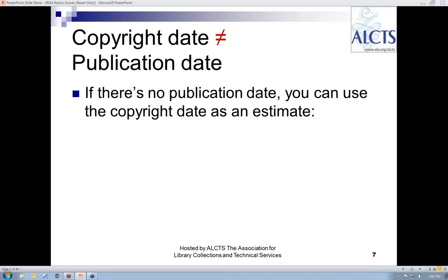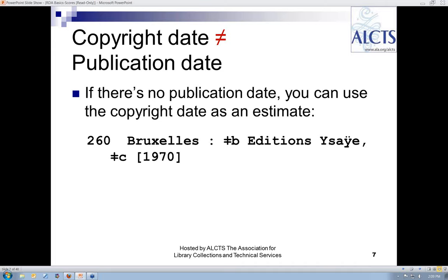RDA has separate elements for publication date and copyright date. In AACR2, the copyright date often substitutes for a publication date — this is not the case in RDA. The copyright date on the violin part title page is 1970, so I have used that as a supplied date of publication. Optionally, you can add the copyright date as well. We'll skip looking at the extent in detail for this example since there is no significant change in the MARC 300 field for a set of parts between AACR2 and RDA.